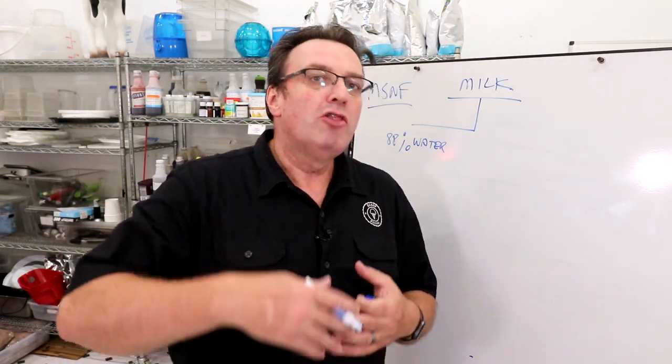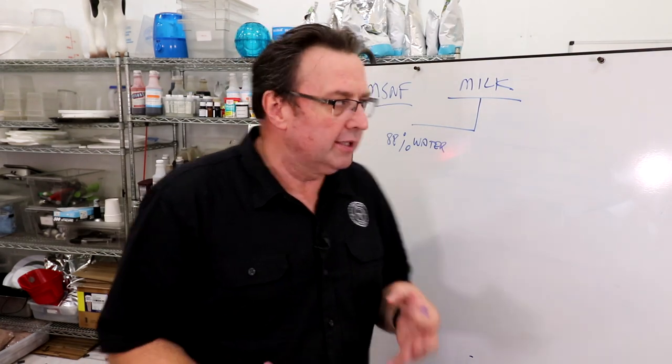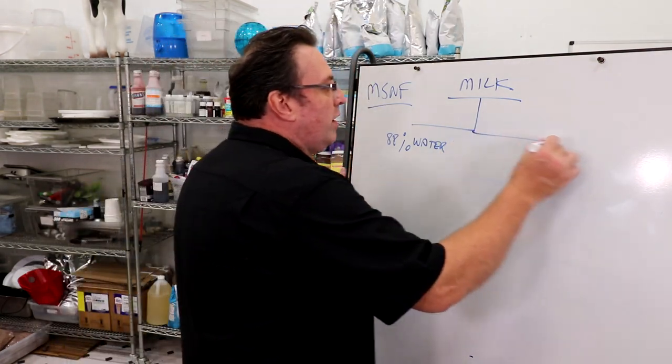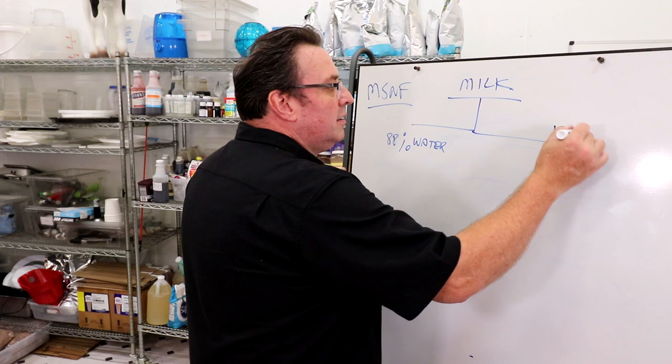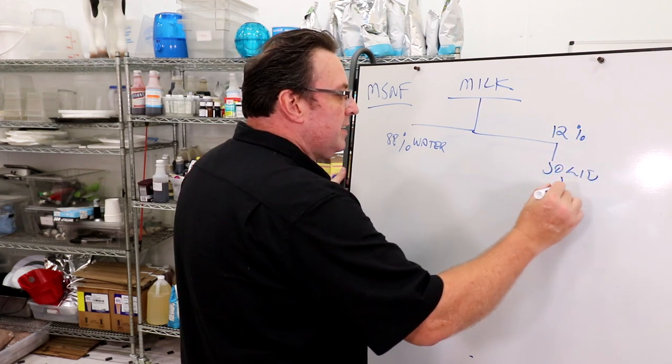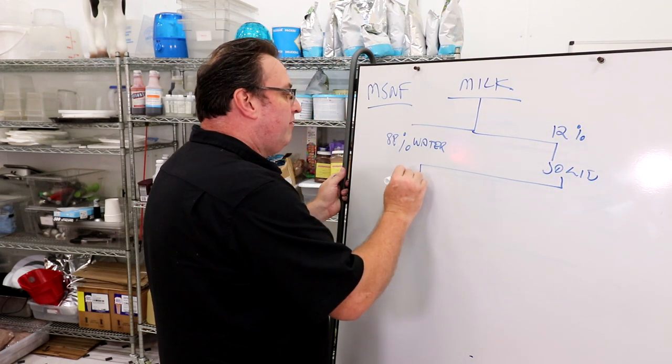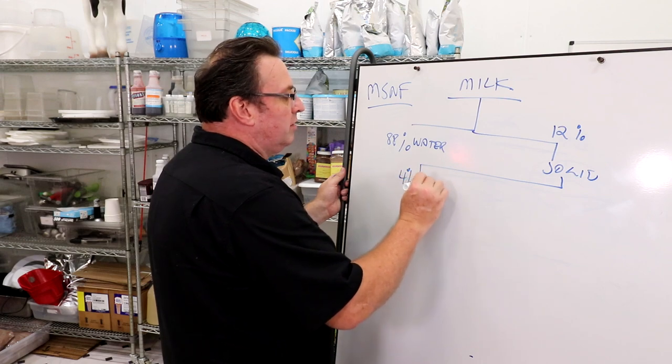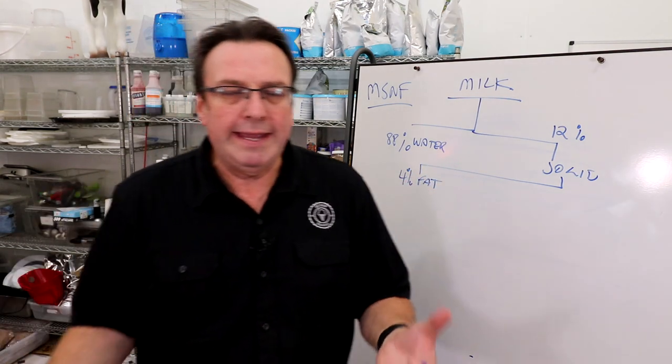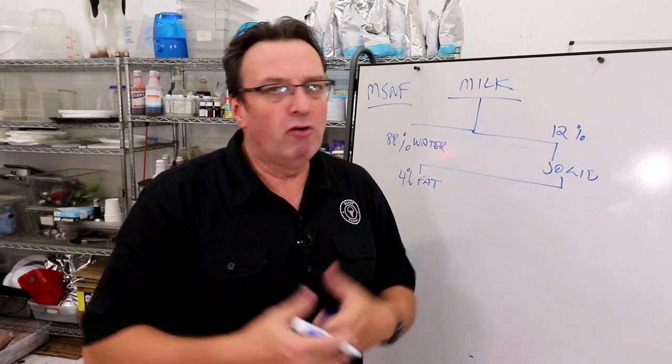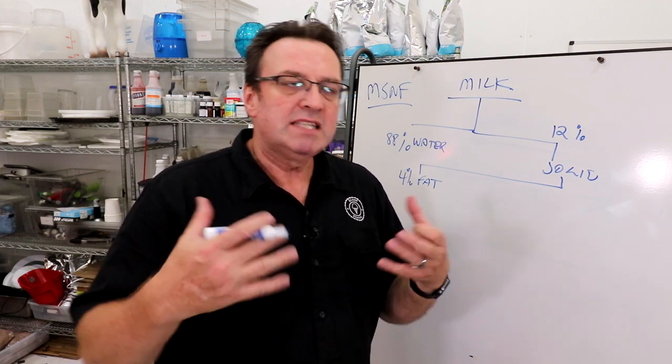The rest of it is solids, and that last twelve percent of solids is broken up into about four percent fat, or milk fat. So when you're looking at a full cream vitamin D milk, it's about four percent fat.